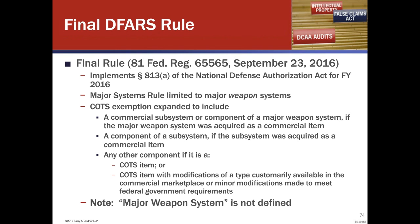The COTS exemption was also expanded to include a commercial subsystem or component of a major weapon system if the major weapon system was acquired as a commercial item. COTS is traditionally commercially available off-the-shelf in the exact same form sold commercially with no modifications — very strict. This opens it up to some forms of commercial items to regain that presumption. This was a good move for contractors — it helps expand the presumption, limits the exceptions to the presumption, and expands the exception to the exception.